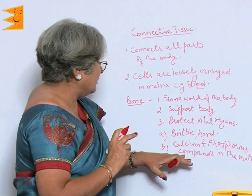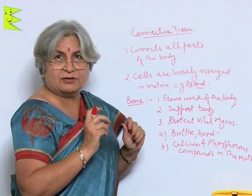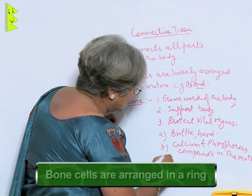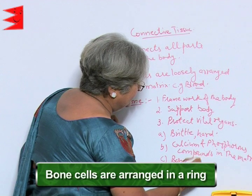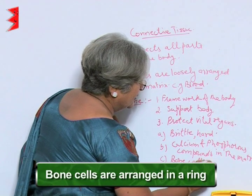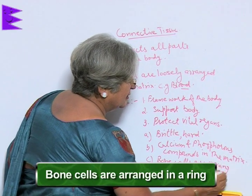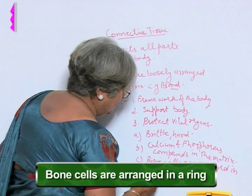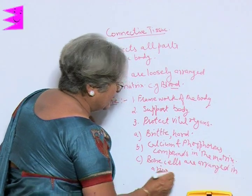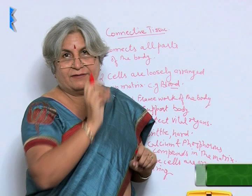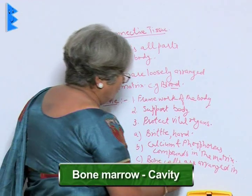Teeth are the hardest tissue of our body. The bone cells are arranged in a ring, and many bones have a cavity in the centre called bone marrow.